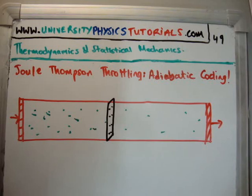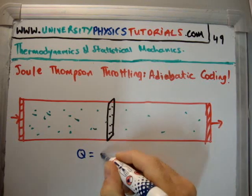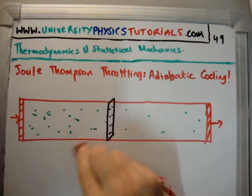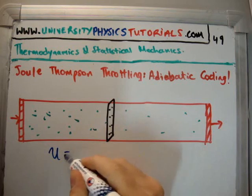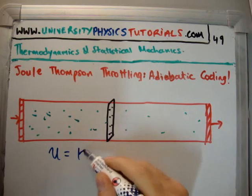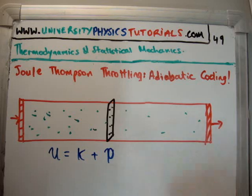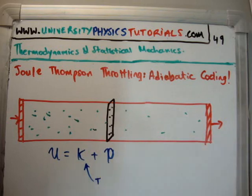Now you might think that adiabatic cooling is a contradiction in terms because surely adiabatic by definition means that there is no heat change. That is correct. However, I suppose I better tell you up front what actually happens is that it's adiabatic so Q is zero. If we look at the internal energy, the internal energy can usually be kinetic energy or it can be potential energy. Now the temperature is related to kinetic energy.